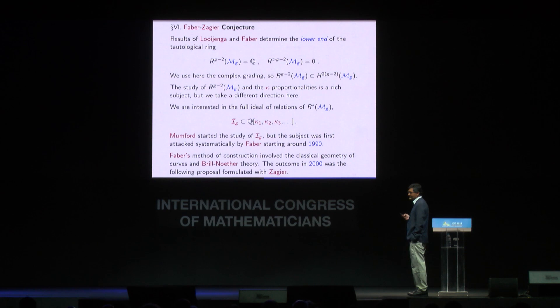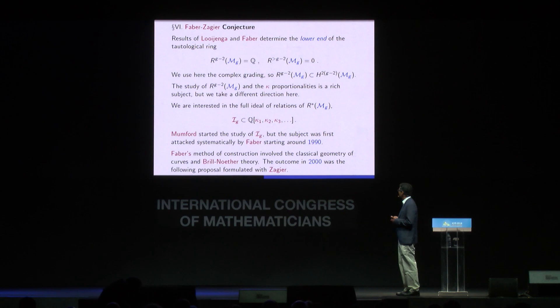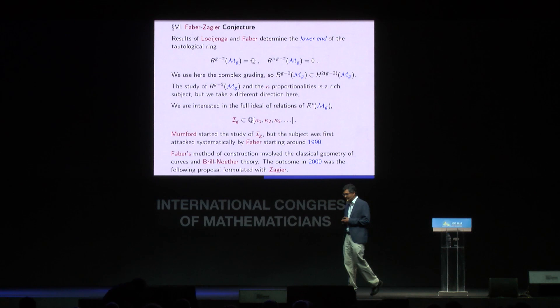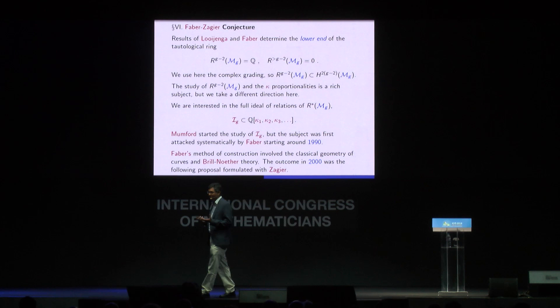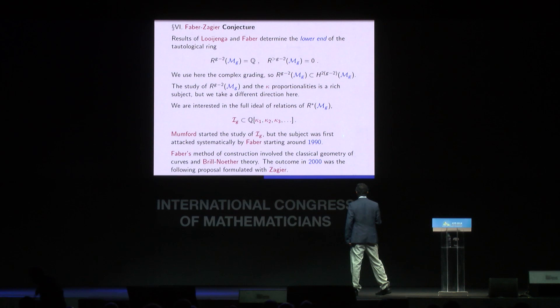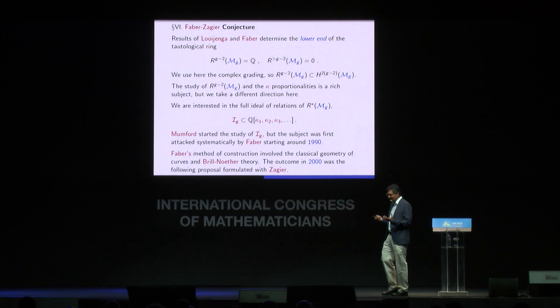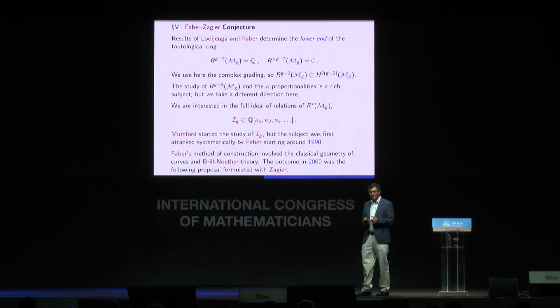Roughly speaking, if you open any book on algebraic curves to any theorem and try to impose that theorem over the moduli space, you get a relation among the κ classes. Carol Faber did this systematically with a lot of computer work. From 1990 to 2000 there was exploration of these relations with a mix of geometry and computer work. Don Zagier joined, and the outcome of that ten-year period was the discovery and prediction of a set of relations now called the Faber-Zagier relations.